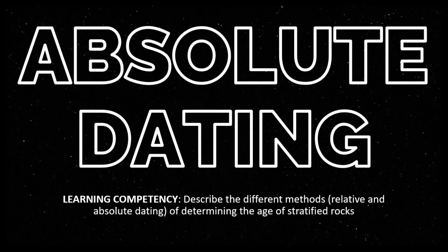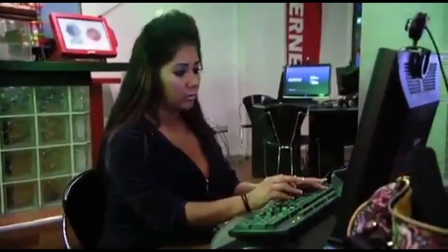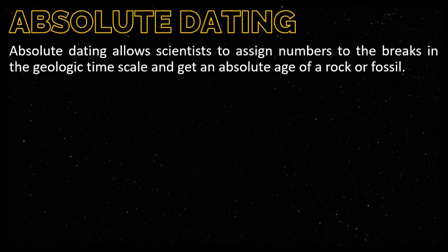In this video we're going to talk about absolute dating. In the previous video we talked about relative dating, which also falls under the same learning competency: to describe the different methods of determining the age of stratified rocks. With the discovery of radioactivity in the late 1800s, scientists were able to measure the absolute age, or the exact age, of some rocks in years.